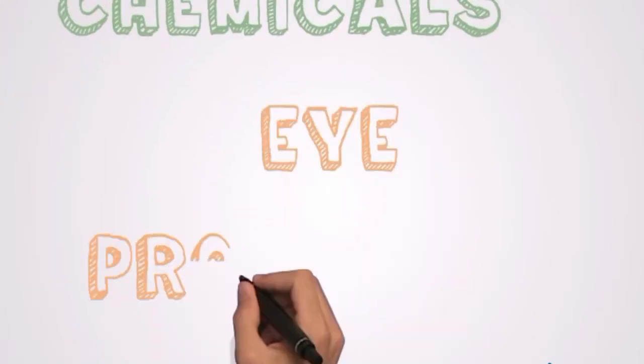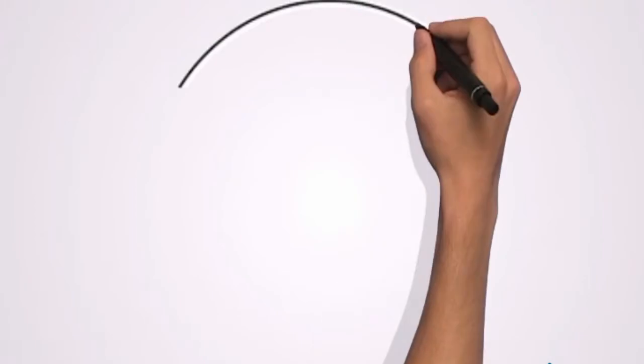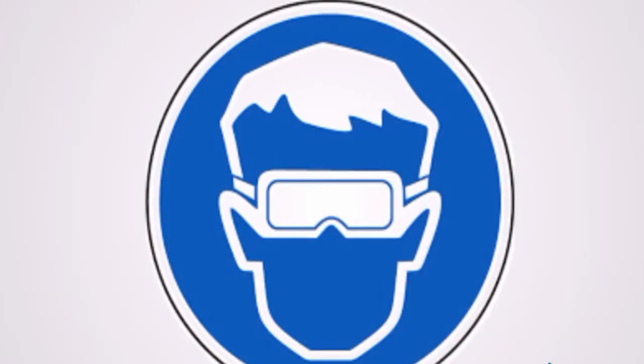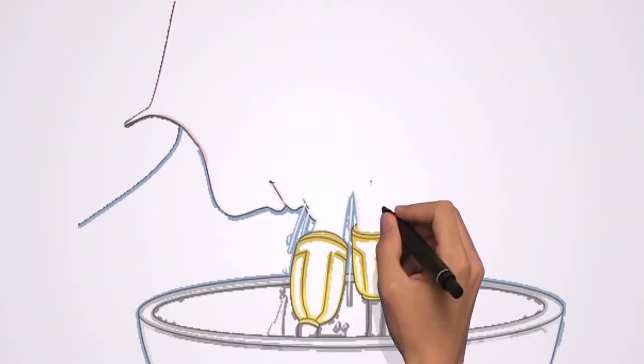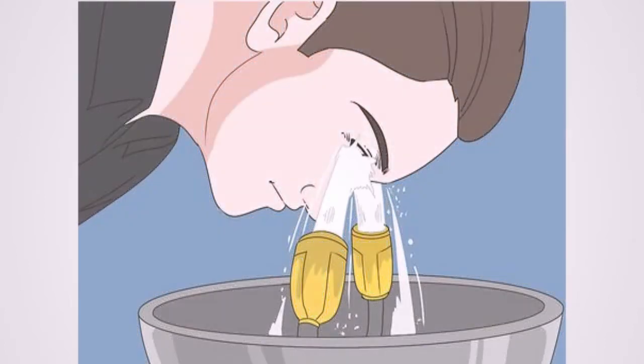Rule 9: Eye protection - Wear safety glasses at all times to protect your eyes from corrosive chemical splashes as well as from flying fragments. In case of injury, immediately flood the eye with lots of flowing water from a sink or fountain for at least 15 minutes. Get medical attention immediately.